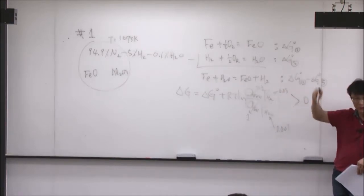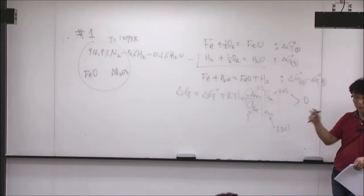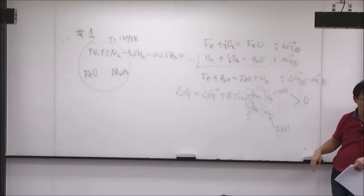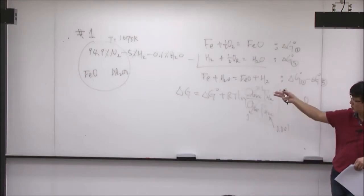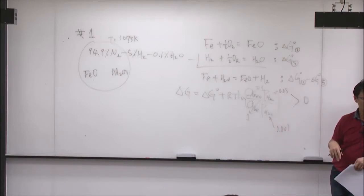For the aluminum system, it's the same approach. You do it the same way, and then instead of alumina Al2O3, you'll get aluminum. Al is stable.